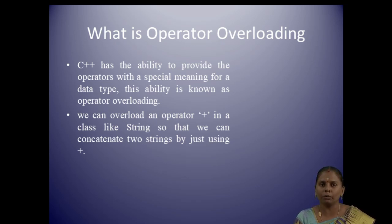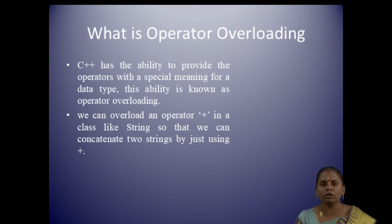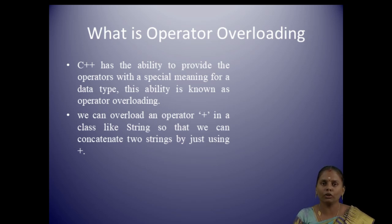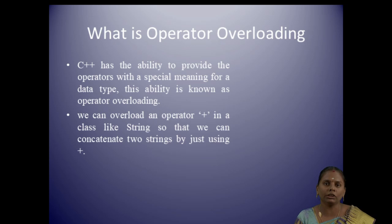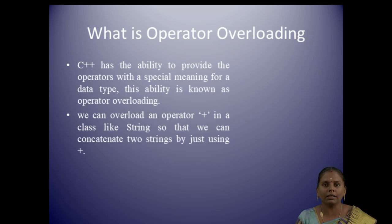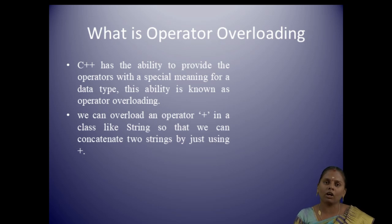For example, what does operator overloading mean? If we are going to perform an addition operation, we use the plus operator. If we pass 2 integer values, it adds them. If we pass 2 float values, it adds them too. But if we pass string values, it will perform concatenation. So based on the data type, the operator performs different actions — this is called operator overloading in C++.